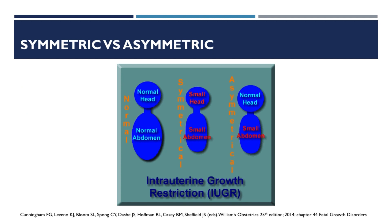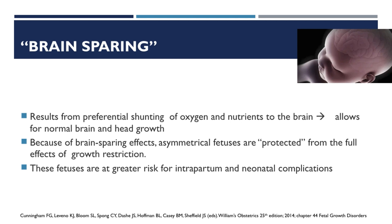This picture nicely depicts what asymmetric and symmetric growth restrictions are. On the leftmost side, we have the normal proportion of the fetus. Symmetrical growth restriction means there is a small head and a small abdomen, so the growth restriction is proportional. In asymmetrical growth restriction, you have a normal head but a smaller abdomen. Brain sparing results from preferential shunting of oxygen and nutrients to the brain, and this usually happens in fetuses who are asymmetrically growth restricted. Brain sparing allows for normal brain and head growth, so asymmetrical fetuses are protected from the full effects of growth restriction, though they are at greater risk for intrapartum and neonatal complications.